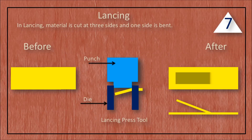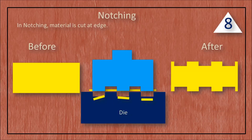In lancing, material is cut at three sides and one side is bent. In a second form of lancing, material is cut at the edge.